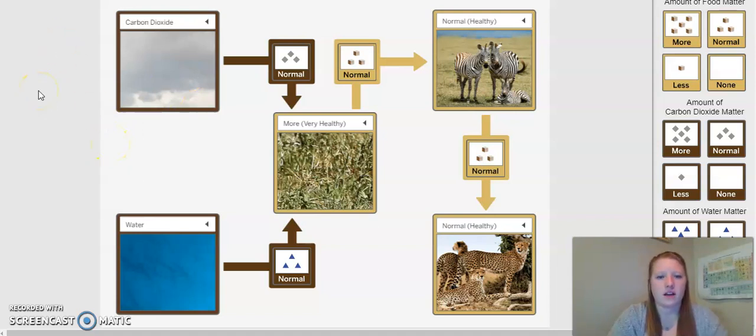By looking at this model, I can see the flow of energy. So the water goes into the plants, so does the carbon dioxide, and then the plants have the energy go into the zebras, and then the zebras have food matter and the energy goes into the cheetahs.